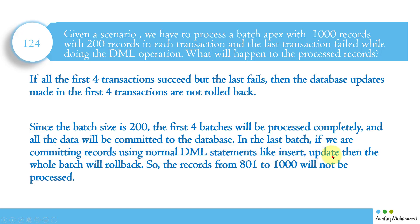In the last batch, if we are committing records using normal DML statements like insert or update, then the whole batch will roll back. There are two types of DML: normal DML (insert, update, delete) and database DML (database.insert, database.update, database.delete). With normal DML, if one record fails, everything in that batch fails — that's why the whole batch rolls back, and records 801 to 1000 will not be processed.